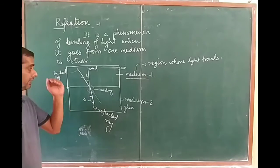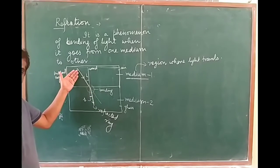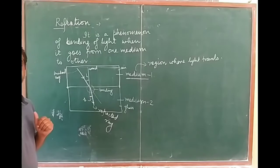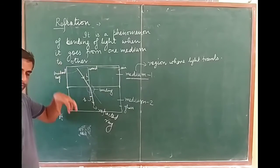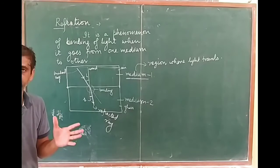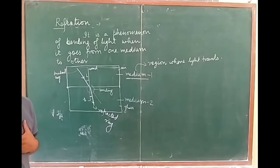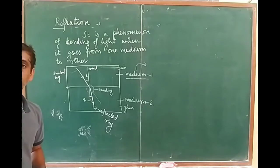This bending of light occurs when light goes from one medium to another. When light moves from one medium to another, it bends. This bending is known as refraction. Let's explain it more.